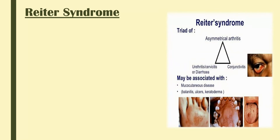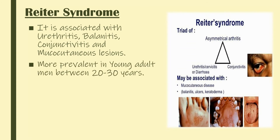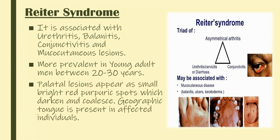The Reiter Syndrome is associated with urethritis, balanitis, conjunctivitis, and mucocutaneous lesions. It is more prevalent in young adult men between 20 to 30 years. Palatal lesions appear as small bright red purpuric spots which darken and coalesce. There is also geographic tongue in affected individuals.